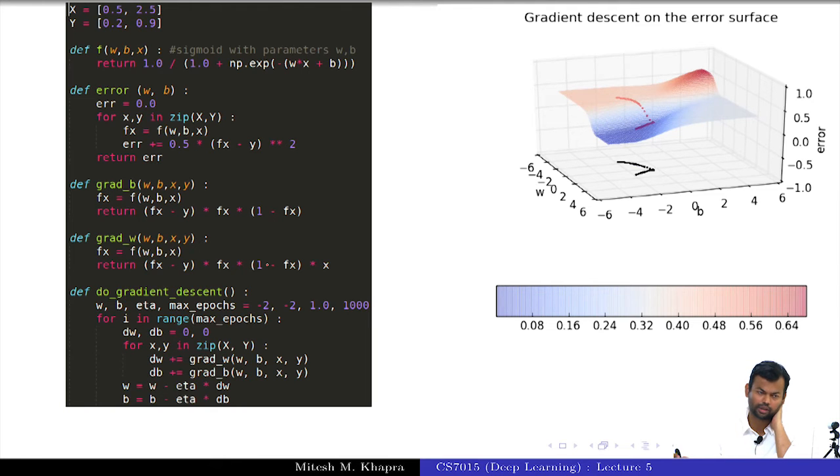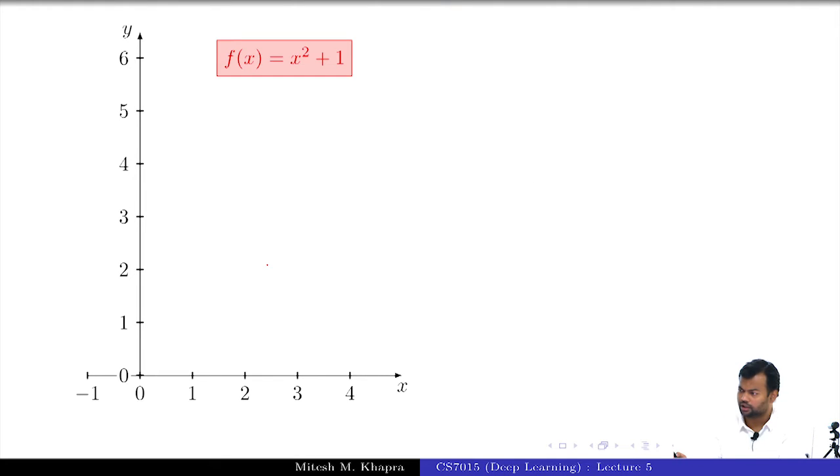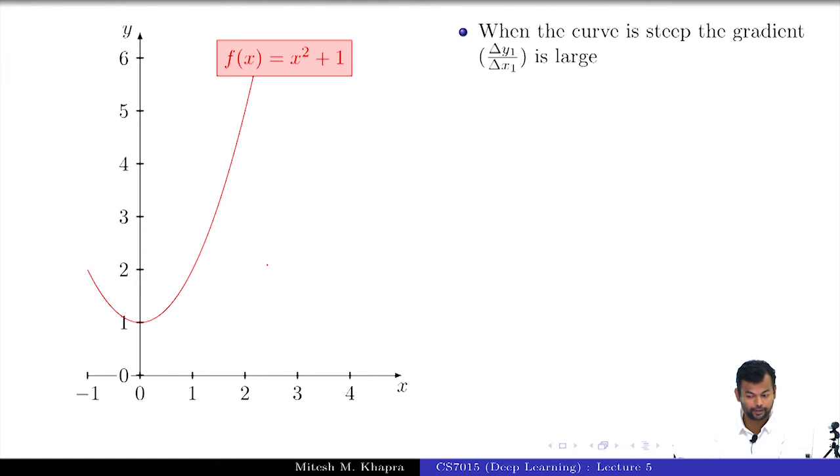The slope is small. How many of you completely understand why the slow and fast movement was there? That is what we will focus on now. Let us take a simple function: f(x) = x² + 1. This is how it will look. Now, in these portions of the curve, the curve is actually very steep, and in these portions the curve is a bit gentle, and of course it becomes very gentle over here.